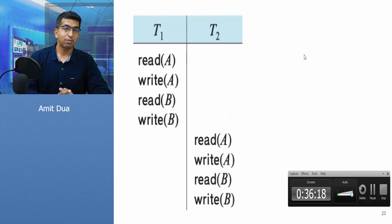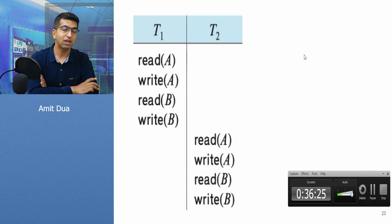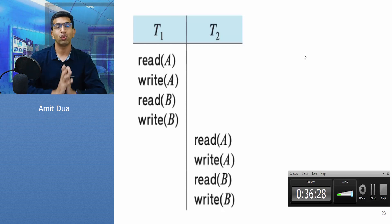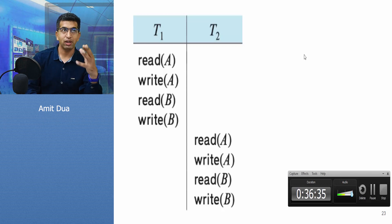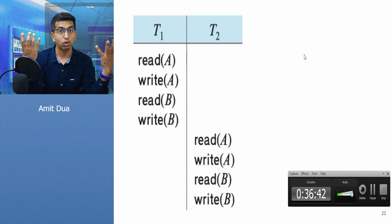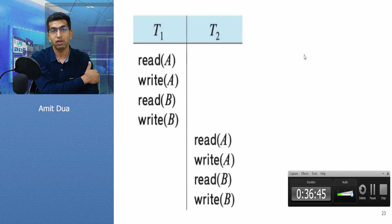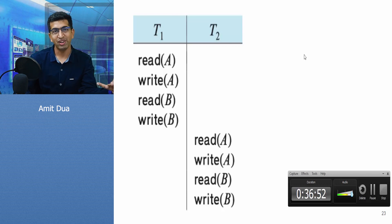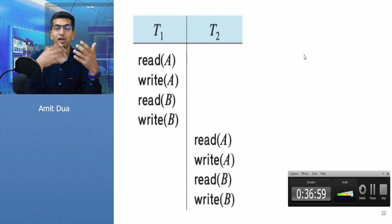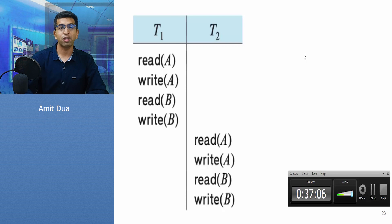This is a conflict serializable schedule — the operations we saw are equivalent to a serial schedule in terms of result. To summarize: we want concurrency, and we say that a schedule which is equivalent to a serial schedule — arrived at by swapping non-conflicting operations — is a conflict serializable schedule. Our task is to ensure the original schedule is conflict serializable, either by swapping non-conflicting operations or by drawing a precedence graph and checking for cycles.